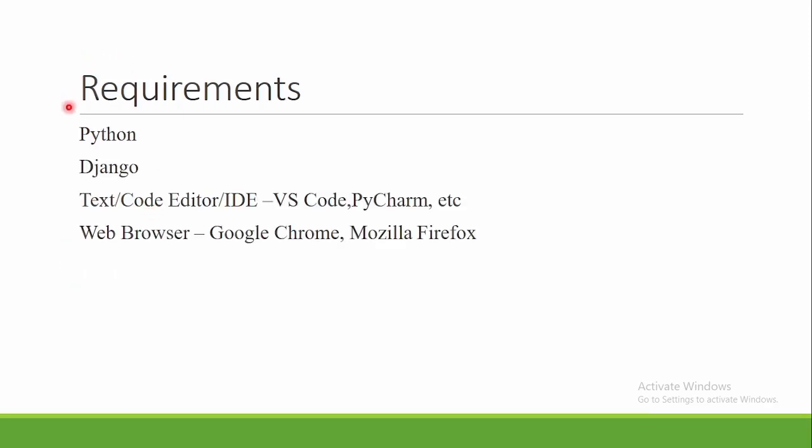Now, let us see what the requirements are — what should be installed on your system. The first thing is Python. Next is Django; in the upcoming video, we will see how to install Django. Next, there should be a code editor — VS Code, PyCharm, or whichever you are working with. For those who do not know how to install or work with a code editor, I will be uploading a video soon regarding VS Code Editor as well. Lastly, you should have a web browser where you can view and interact with your Django projects. Any web browser will do.